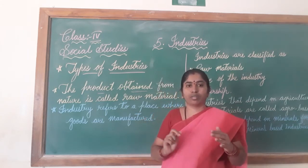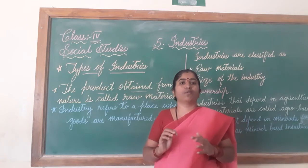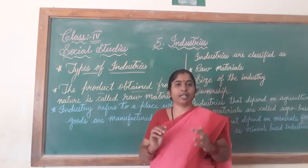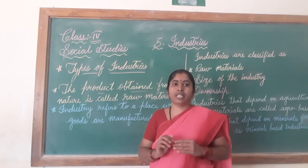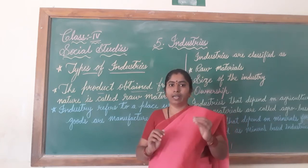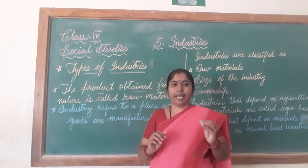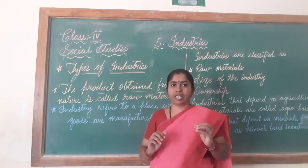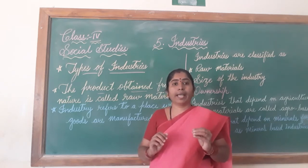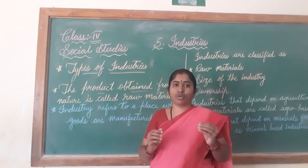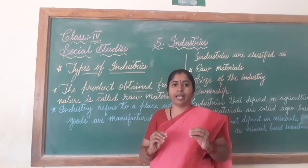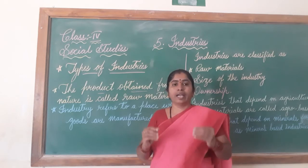You might have seen utensils in your house which are made out of steel, iron, and copper. So iron, copper, and steel are the raw materials which you get from nature.